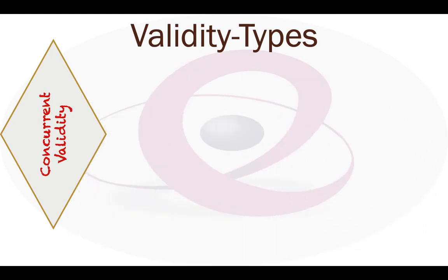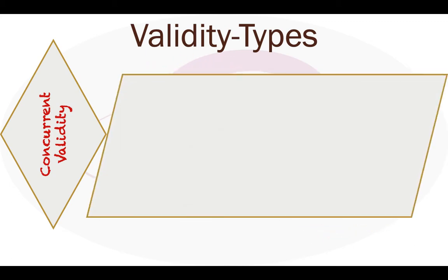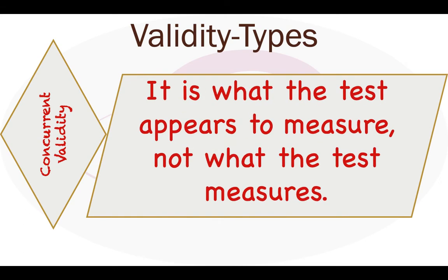Next is concurrent validity. This term refers to the process of validating a new test by correlating it with some available source of information obtained shortly before or shortly after the new test is given. Concurrent validity indicates the extent to which the test score corresponds to already accepted measures of performance.